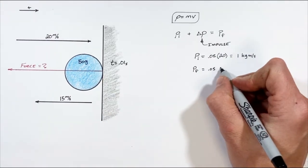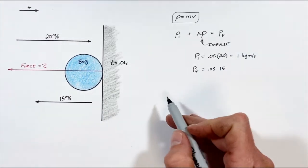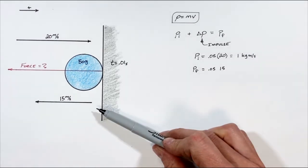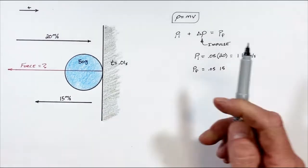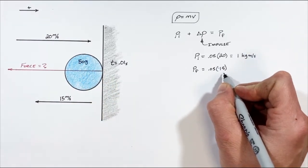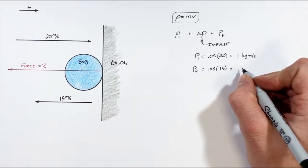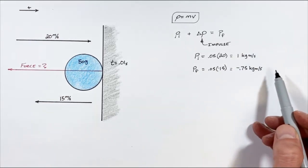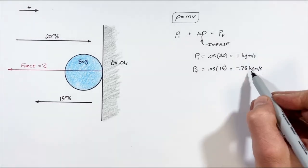For our final momentum, we still have 0.05 kilograms of mass, but now there's 15 meters per second for the final velocity. We have to be careful because the velocity is to the left, so if we're saying right is positive, this 15 meters per second is negative. That leaves us with negative 0.75 kilogram-meters per second.